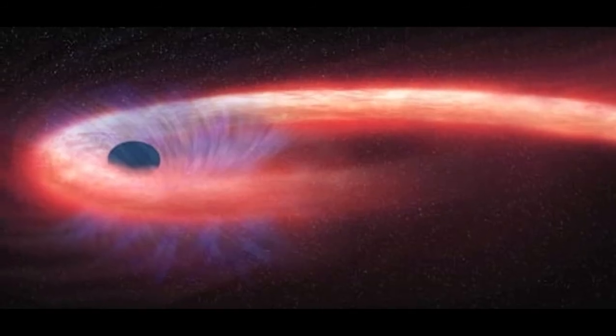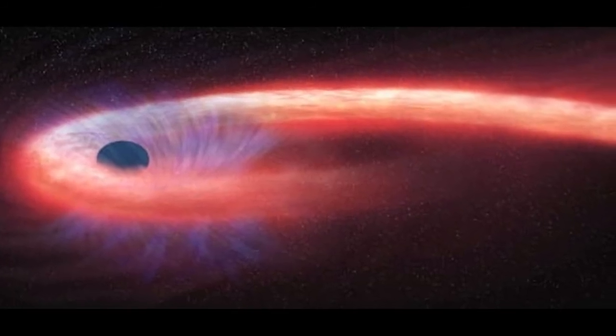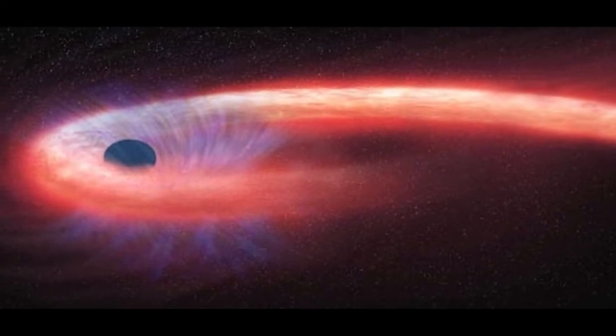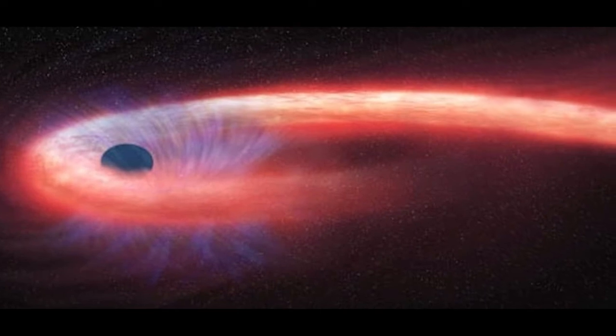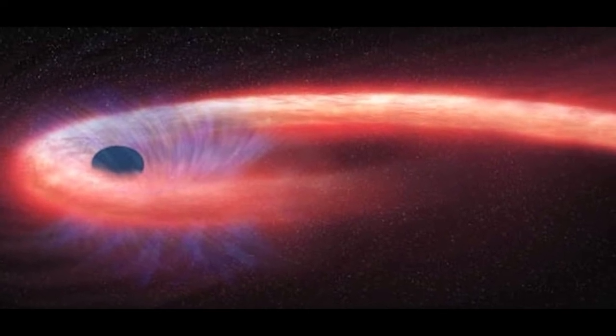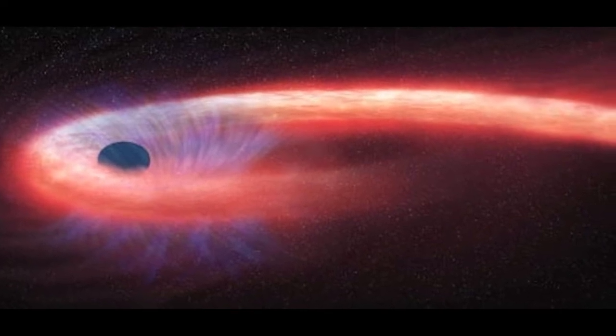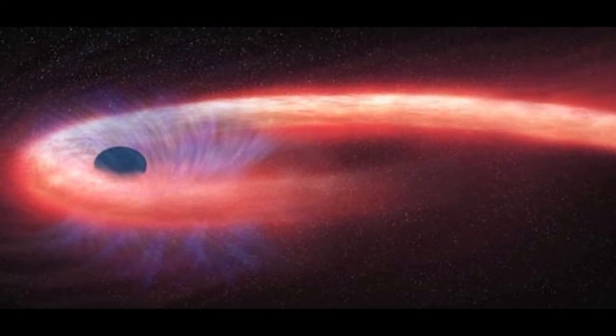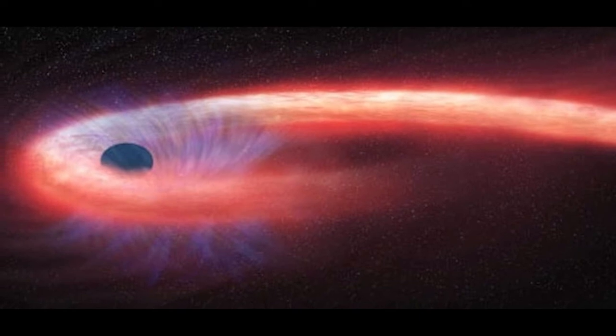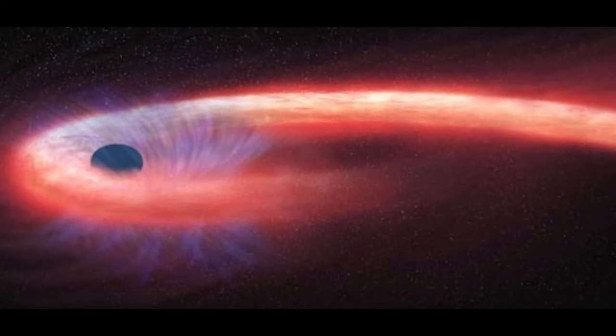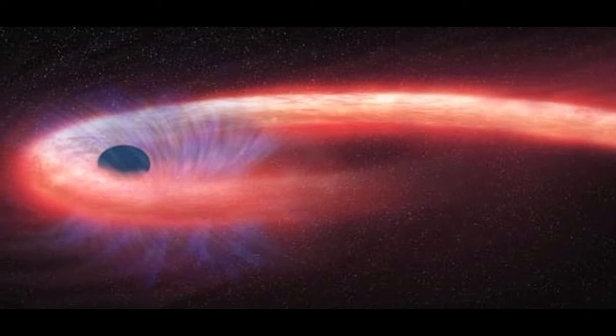The first view of a spaghettified star. Black holes are messy eaters. When an unlucky star ventures too close to one of these voracious objects, the black hole's extreme gravity stretches the star into a long noodle shape in a process called spaghettification. In May, researchers saw this untidy process happen directly for the first time, when a black hole located 750 million light-years from Earth and weighing 30 million times the mass of the sun trapped a passing star in its clutches.